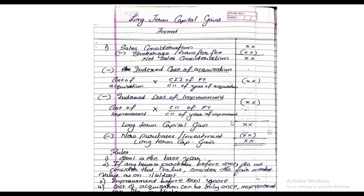It's a very simple sum, just 4-5 steps. Now, before solving the sum, there are a few rules to note. Number 1: 2001 will be called the base year. If any house is purchased before 2001, do not consider that value — instead, consider the fair market value as on 1st April 2001. The improvement before the year 2001 should be ignored. The cost of acquisition will only appear once in the question, but improvement can be multiple times. The format is: sale, less cost of acquisition, less cost of improvement gives you long-term capital gain. Less new purchase gives you your final net long-term capital gain.